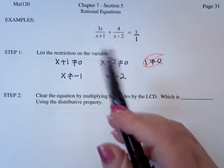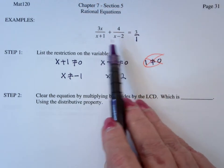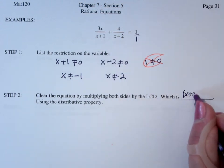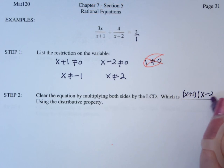The LCD is just going to be the product of these two guys, because they have nothing in common. And it's going to be x plus 1 times x minus 2.